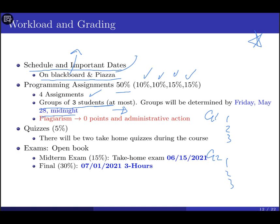For every coding assignment submission, I'll ask you to fill out a peer and self-evaluation form. This allows me to confirm who worked and who didn't. If you didn't participate in the coding assignment, don't expect to get the same grade — you may get zero. I want to make sure everyone participates.